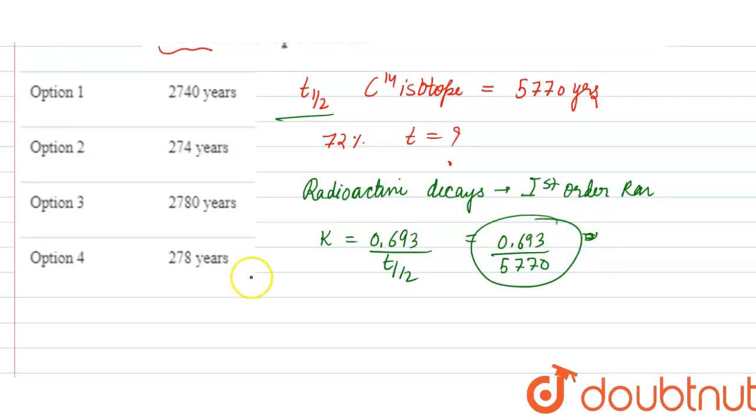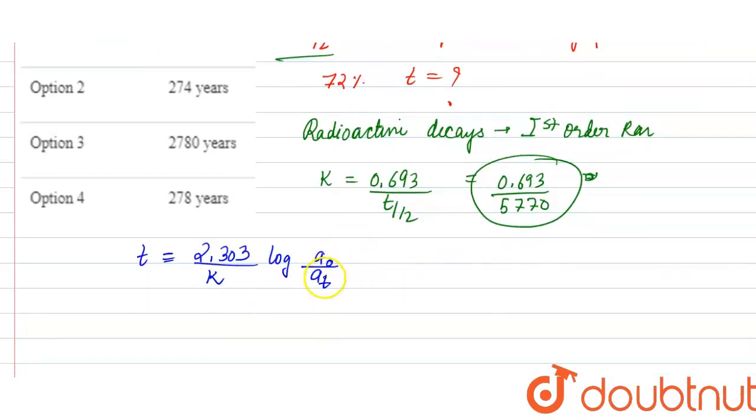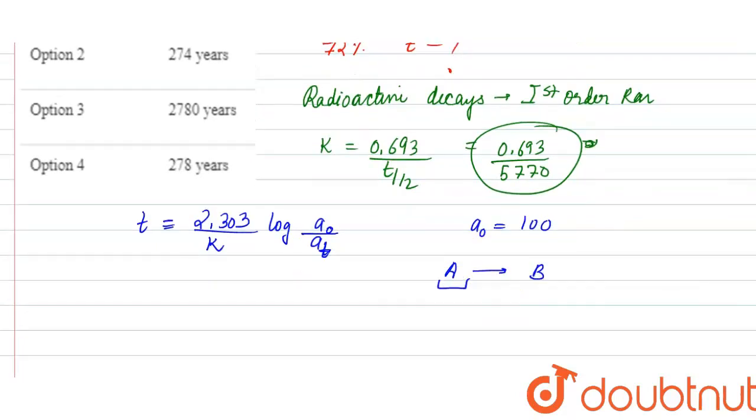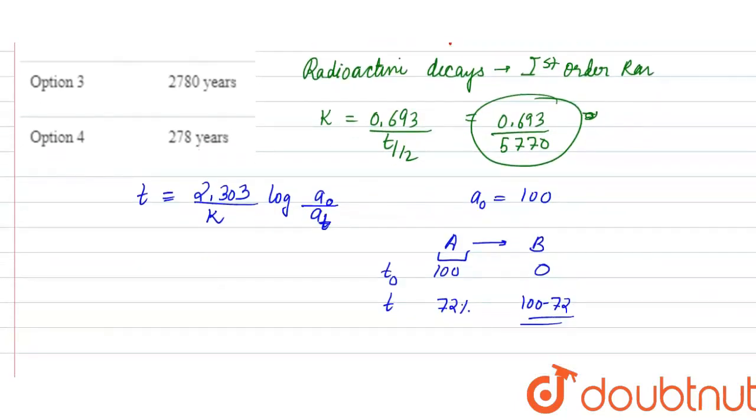Now, I need to find the time when my isotope is 72% left. I know that for first order reaction, the equation is: T equals 2.303 upon rate constant into log of initial concentration upon concentration at time T. Initially, it will be 100%. Let's say this is my C14 isotope. Initially, this is 100. After time T, we're told 72% is remaining. That means 100 minus 72, the product B is formed.